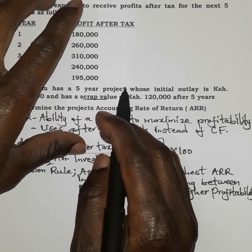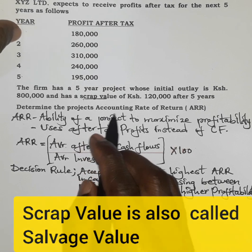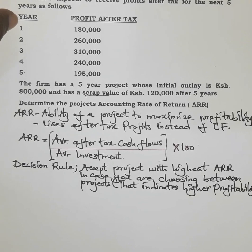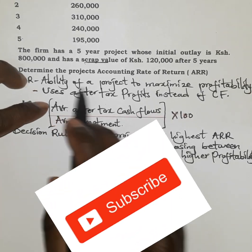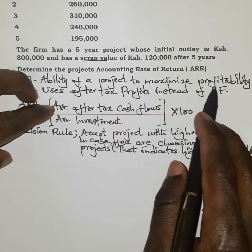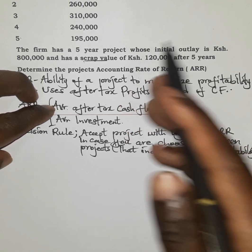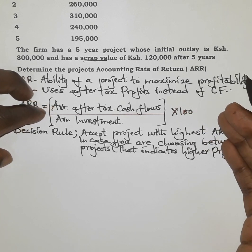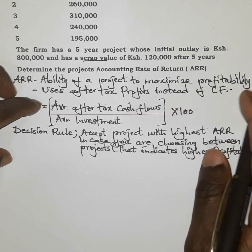We are going to determine the project's Accounting Rate of Return. When we talk about the Accounting Rate of Return, we are referring to the ability of a project to maximize profitability — how a project increases the profits of a particular business.